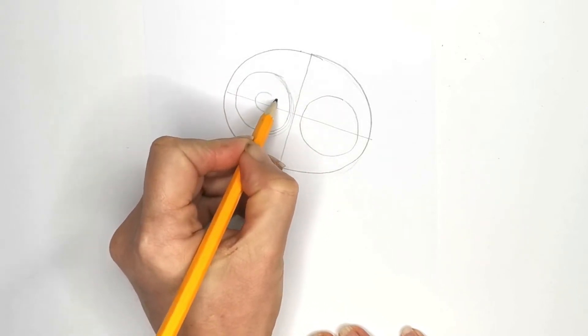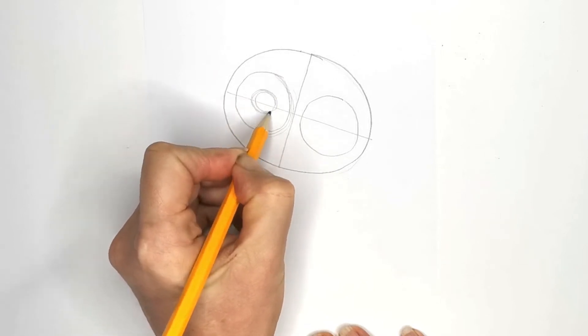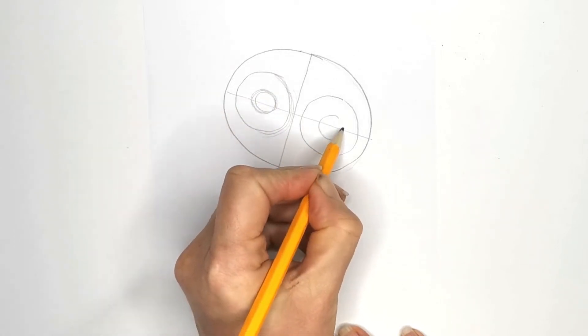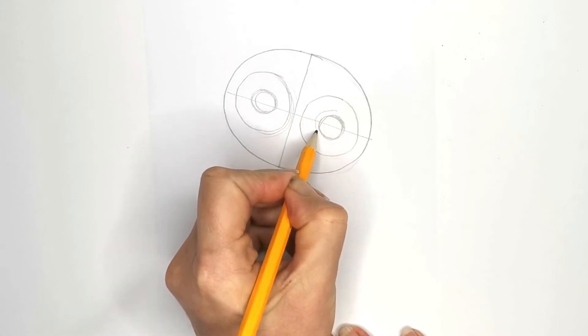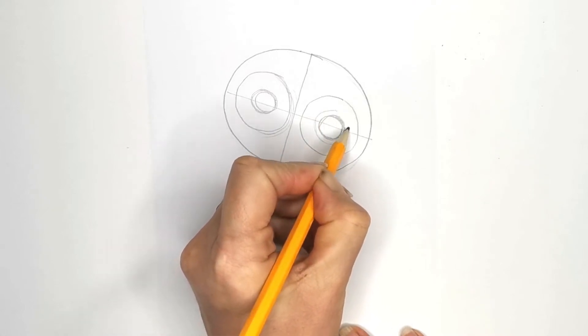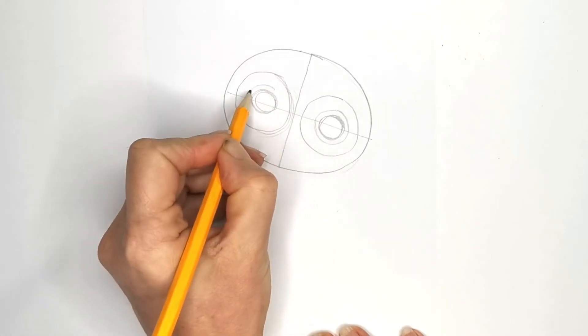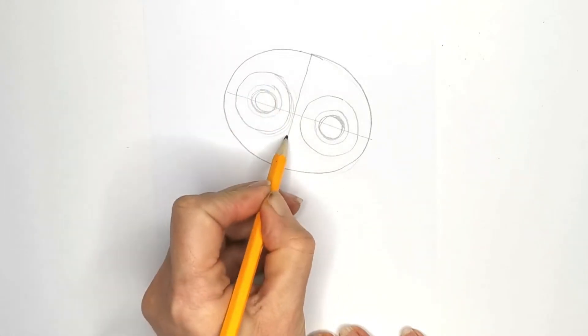And let's draw in the pupils, getting a nice round shape there. Go round a few times till we're happy with the shape. We've got another round shape to draw around here. Looking good.